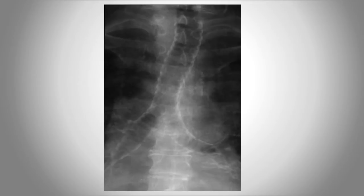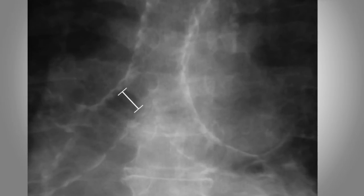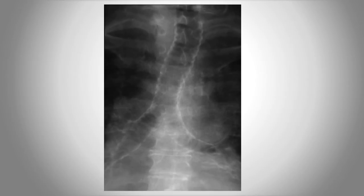That is why if you swallow something wrong — for example, if you aspirate a peanut or a piece of food — it typically goes straight down into the bronchus intermedius of the right lung. The larger diameter of the right bronchus compared to the left also makes it more likely for aspirated material to go down the right bronchus into the bronchus intermedius. This is also the most common site of aspiration of gastric contents when the patient is vomiting.